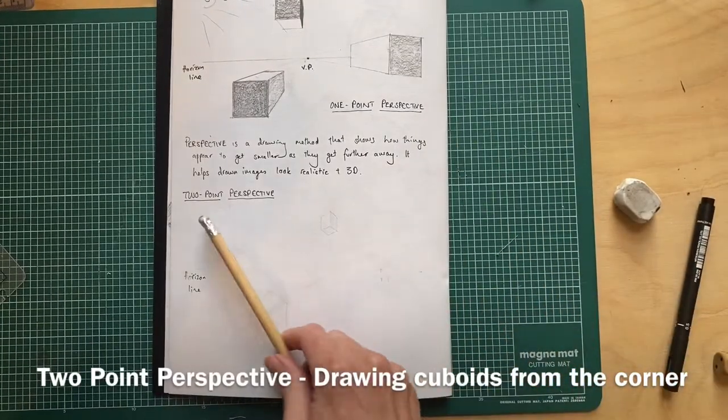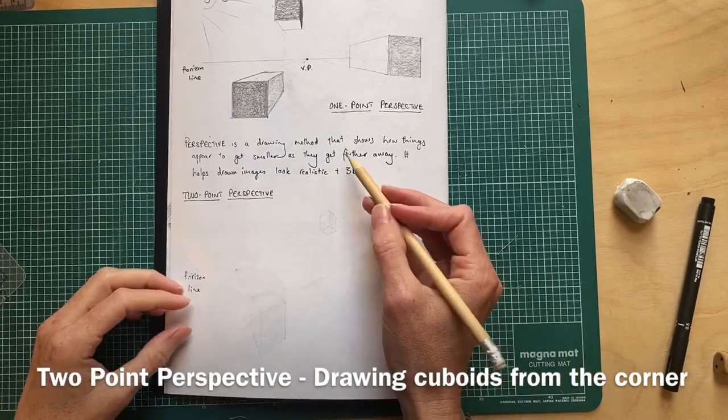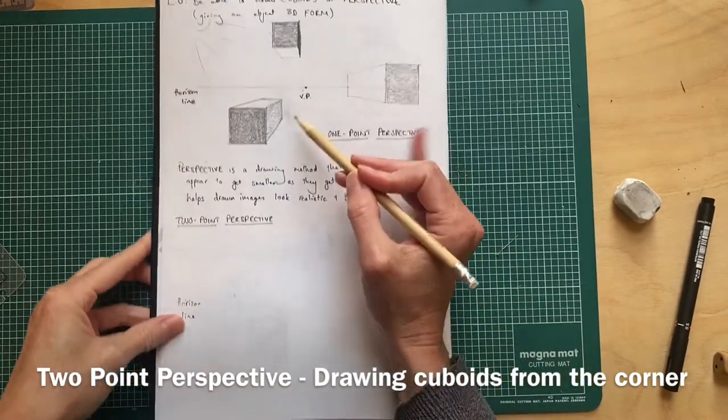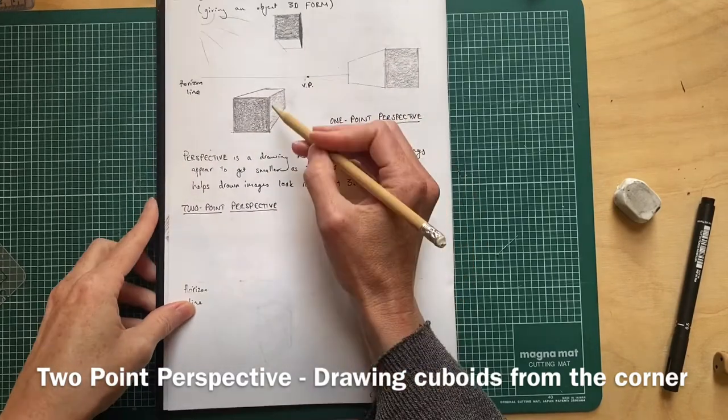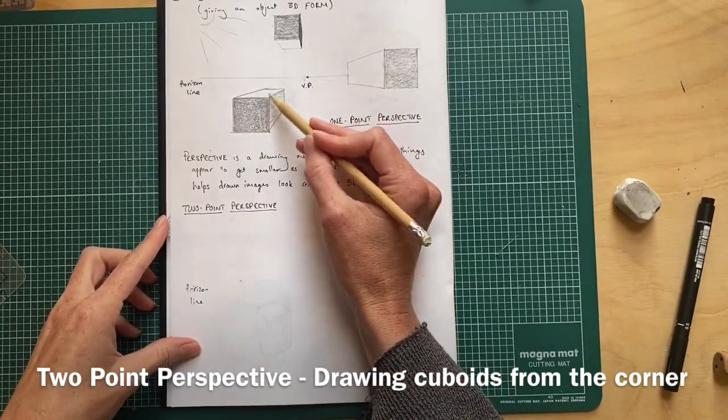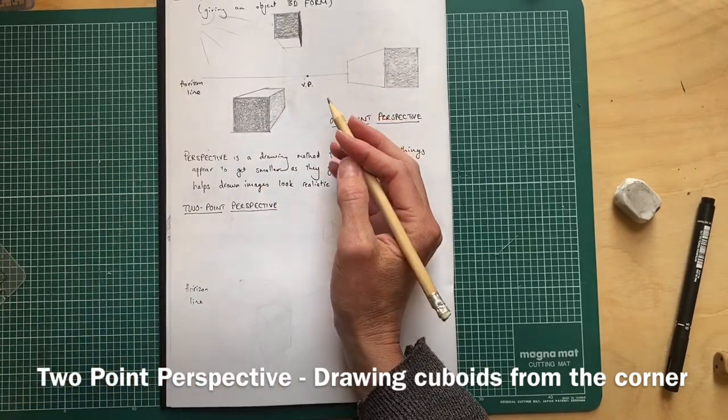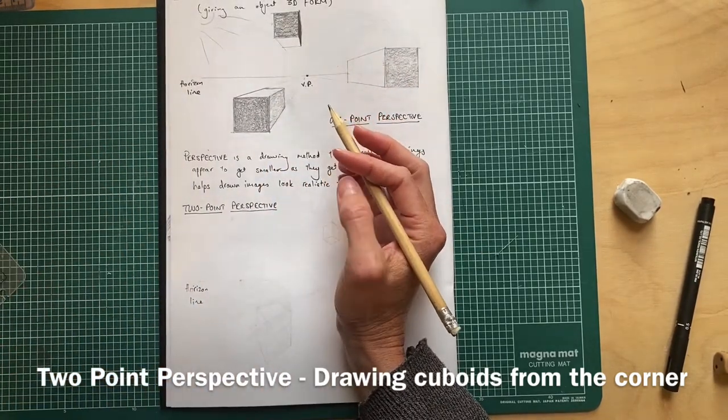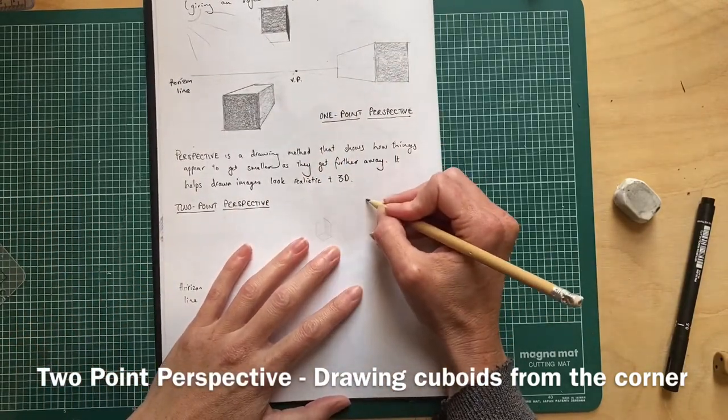We're going to do two-point perspective now. It's similar to one-point perspective, but instead of having one vanishing point, we'll have a second vanishing point. Instead of seeing our object from one side, we'll see it from two sides. This would be like if you wanted to view a building from the corner.